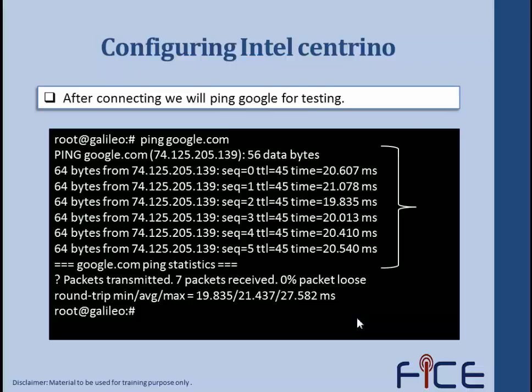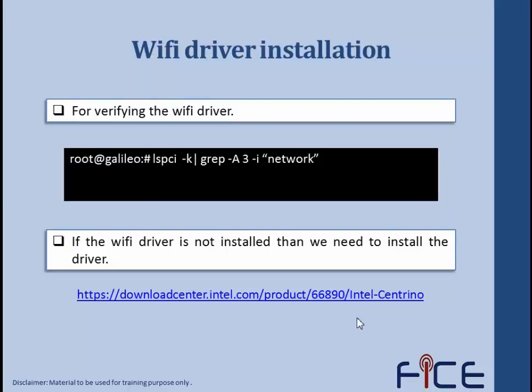Once we ping, we will start receiving different bytes and their response times, indicating that our Intel Centrino and our Galileo are connected to that particular Wi-Fi network. We can then perform various IoT applications by connecting our Galileo to the internet.